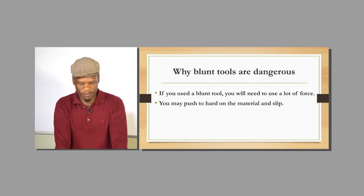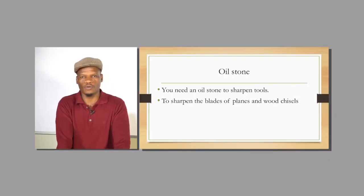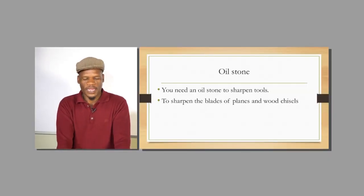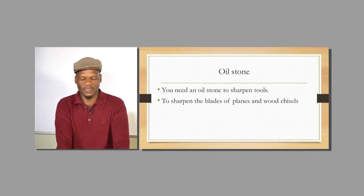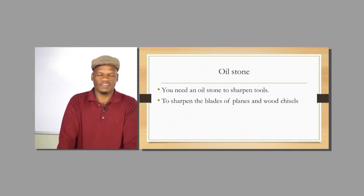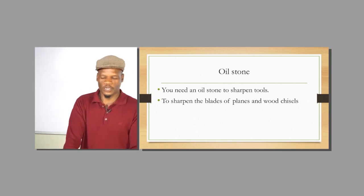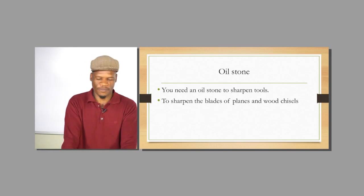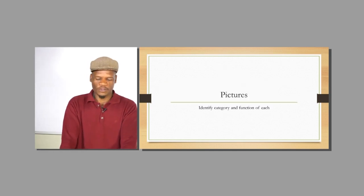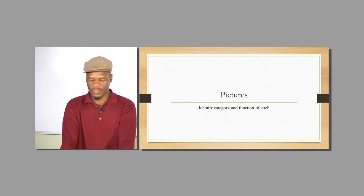One of your outcomes in topic number four is that you must be able to use an oil stone. An oil stone is a type of stone specifically used to sharpen chisels. In the workshop, carpenters use it most often to sharpen their chisels.